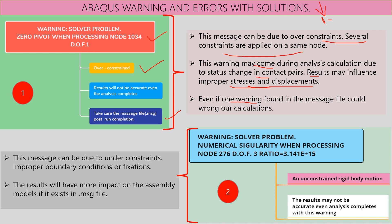The second warning is 'Numerical singularity when processing node 276 with degree of freedom 3.' While the first warning is about over-constraint, this one is about under-constraint. If you do not provide proper boundary conditions — for example, applying a load without any constraints — the body will undergo rigid body motion, moving freely. Results may not be accurate even if the run completes. If you constrain only one node and apply a load, the run may complete but results can vary. This has a greater impact on assembly models.